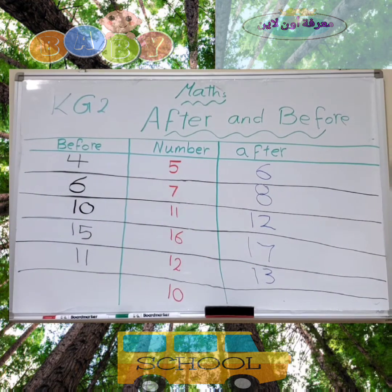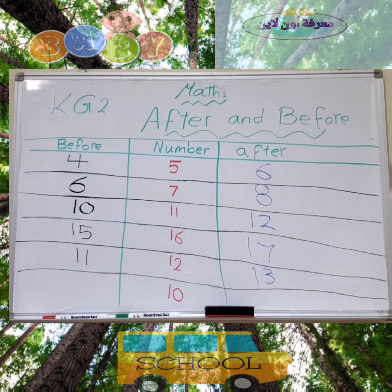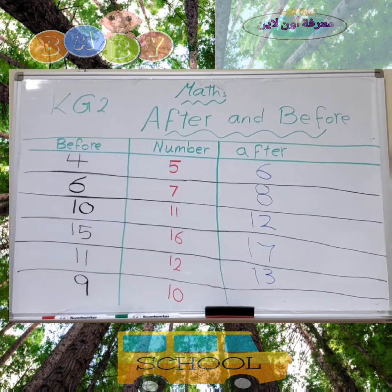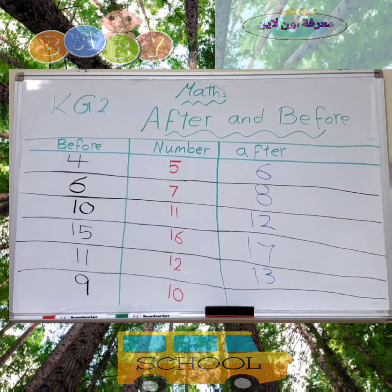The last number — this is number 10. What is the number before 10? Let's count back. We have number 9. We write number 9. What is the number after? 1, 2, 3, 4, 5, 6, 7, 8, 9, 10 — we have after 10, number 11.